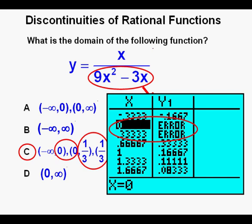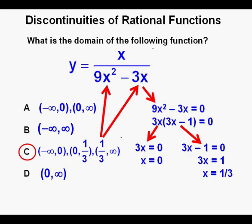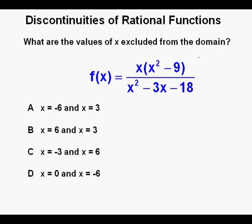Another approach is to substitute values from the answer choices into the denominator and see which give 0. Next problem: for the function f of x equals x times quantity x squared minus 9 over x squared minus 3x minus 18, what values of x are excluded from the domain? This problem finds values of x that make the denominator 0 and the function undefined.